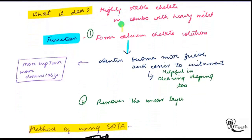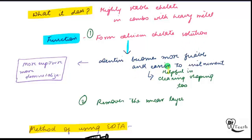EDTA forms a highly stable chelate in combination with heavy metals. It has two functions: first, it forms a calcium chelate solution — reacting with calcium in dentine — which makes the dentine more friable, weaker and easier to instrument. Therefore EDTA is helpful in cleaning and shaping. More exposure means more demineralization.